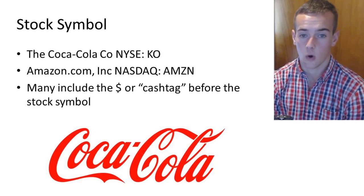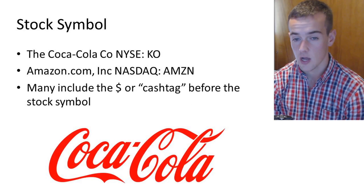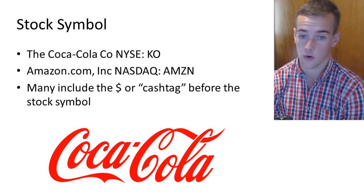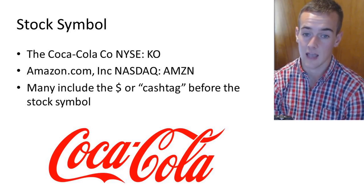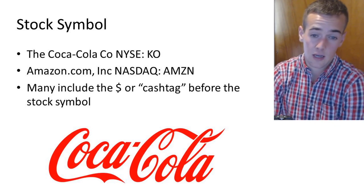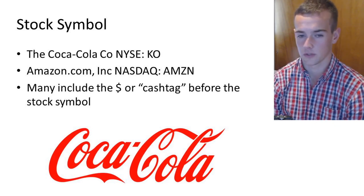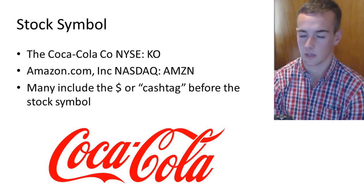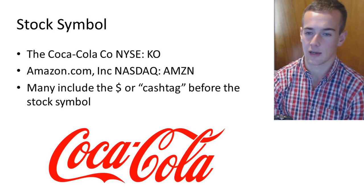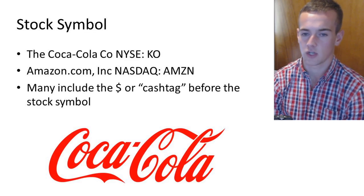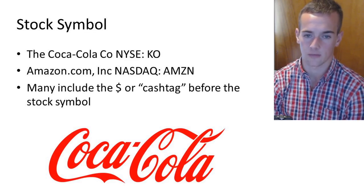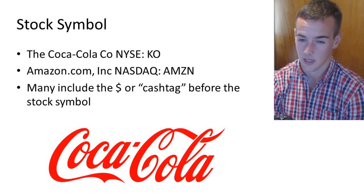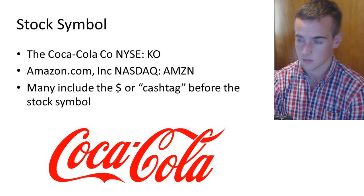For example, the Coca-Cola Company trades on the New York Stock Exchange and their stock symbol is K-O. Amazon trades on the NASDAQ Exchange with the four-letter symbol A-M-Z-N. Something interesting: putting a dollar sign before a stock symbol is called the cash tag, which is used on Twitter to associate that tag with a stock — it's a way to identify a stock symbol on some social media platforms. So if you ever see a dollar sign in front of a stock symbol, that's why.